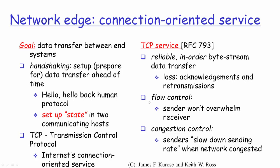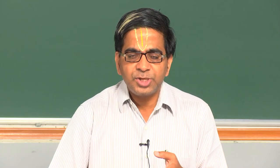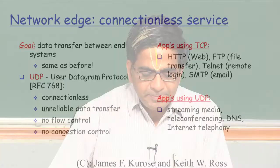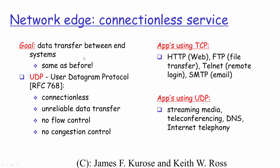TCP offers reliable in-order byte stream transfer, flow control to prevent data loss due to lack of memory buffers, and congestion control for intermediate network devices like routers. For connectionless service, the objective is still to transfer data between end systems, but without an explicit connection setup. The most commonly used transport layer protocol for connectionless service is UDP — User Datagram Protocol — which provides no flow control, no congestion control, and unreliable data transfer.